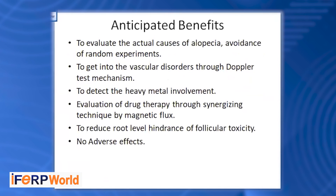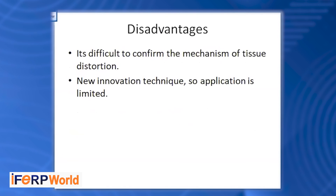Here we come to anticipated benefits: evaluating the actual cause of alopecia, avoiding random experimentation — such as for alopecia areata — and understanding how hair loss results from vascular disorder through Doppler test machines. Also detecting heavy metal movement like copper, biotin, and zinc, and evaluating drug therapies through synergizing techniques by magnetic flux to reduce hindrance. There is no drug interaction or adverse effect with these medications. A disadvantage is that we cannot determine the mechanism of tissue distortion or necrotic tissue, but we can locate where necrotic tissue or tissue distortion is found. These are new innovation techniques, so application is limited.